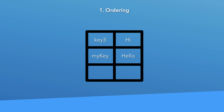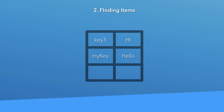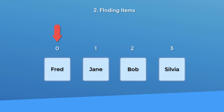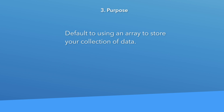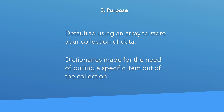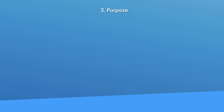The second criteria is finding items. If you need to access specific items from your collection, a dictionary is intended to help with that — you give it a key and out pops the data. You can still do this with an array, but you need to know the index of that item. If you don't know the index, you'll have to look through each slot of the array, which is not very efficient. The last criteria is purpose — when you need to store a collection of data, I would default to using arrays because they're general purpose. A dictionary is more specialized for storing data with the intention of looking up a specific piece of data later.